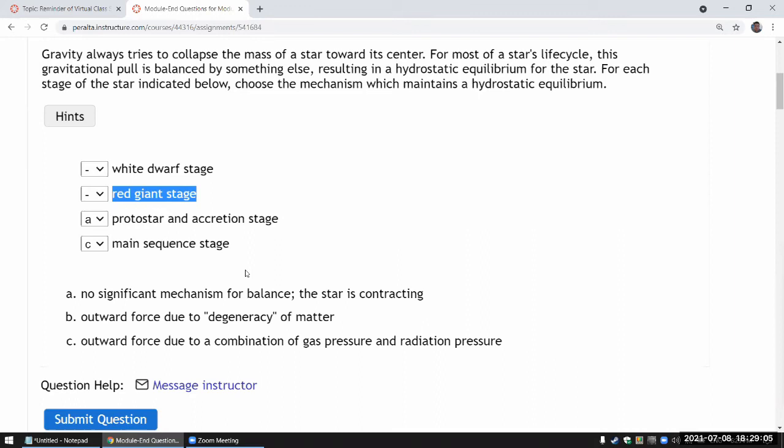And what the textbook says is that the volume in which the fusion takes place is actually greater. So more energy is produced and that pushes the outer edges out. And at some point, the hydrostatic equilibrium is maintained again.